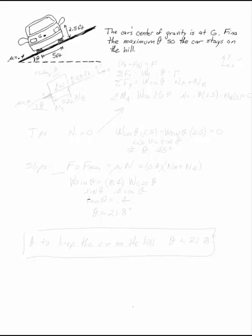The car's center of gravity is at G. I want to find out what the biggest value of theta can be so that the car stays on the hill.